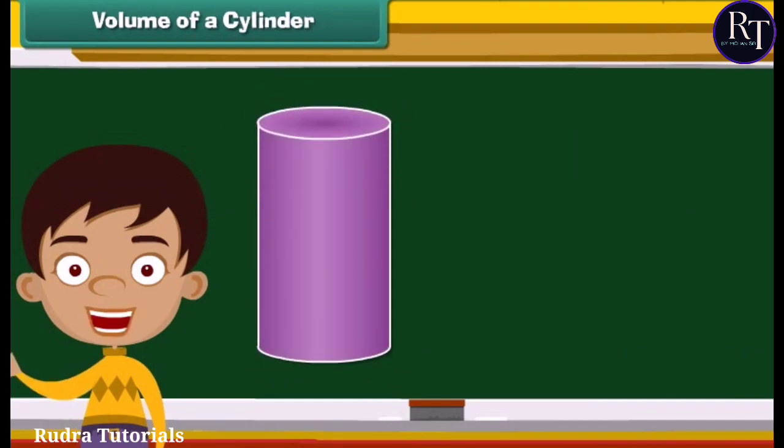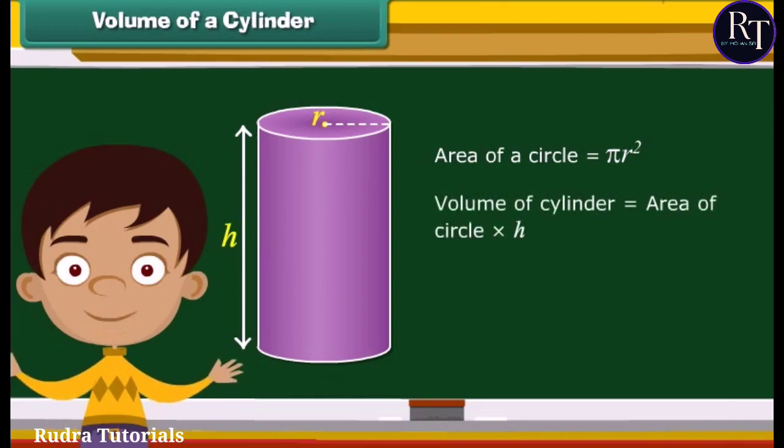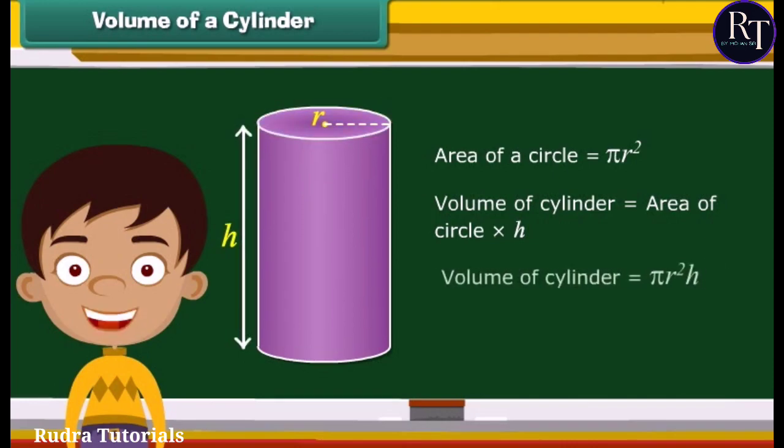A solid that has the shape of an ordinary tin can or a drum is a cylinder. The two bases of a cylinder are circular in shape. We know area of a circle is equal to pi R square. For calculating volume, we will multiply area of a circle with the height. So, the volume of cylinder is equal to pi R square into H.